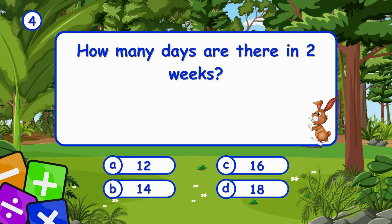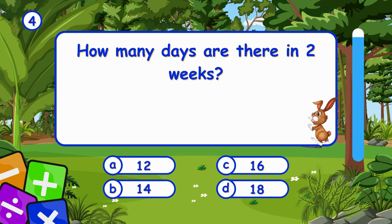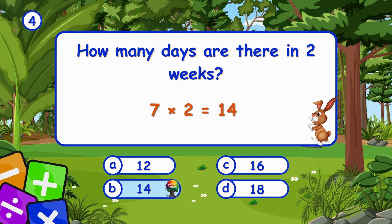How many days are there in two weeks? It's B, 14. Two weeks have 14 days — seven days per week.